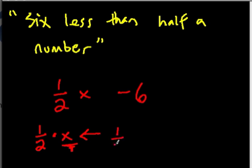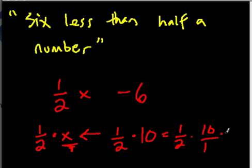For example, if it was one half times 10, you can think of this as one half times 10 over 1, which is 10 over 2 times 1, or 10 over 2. And 10 over 2 is 10 divided by 2, which is 5.